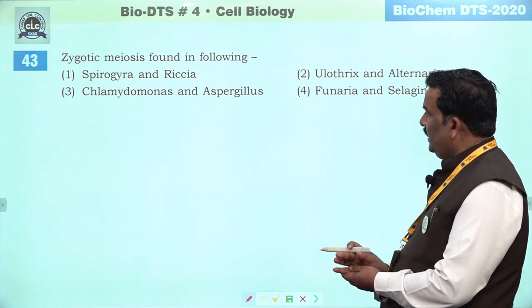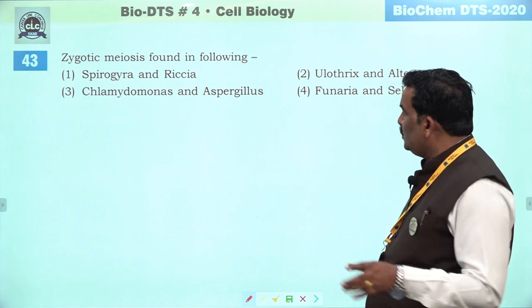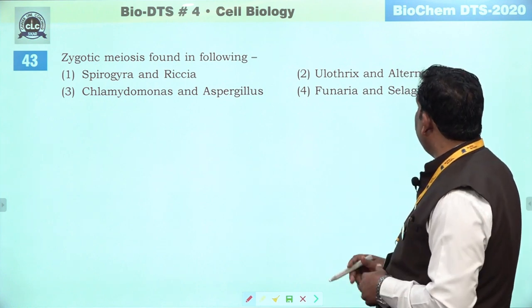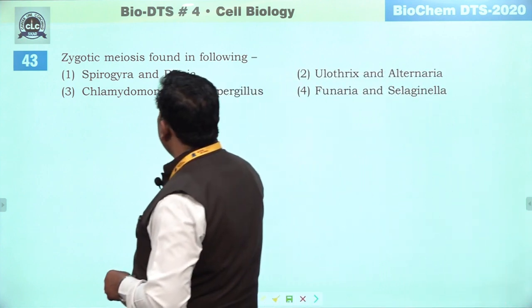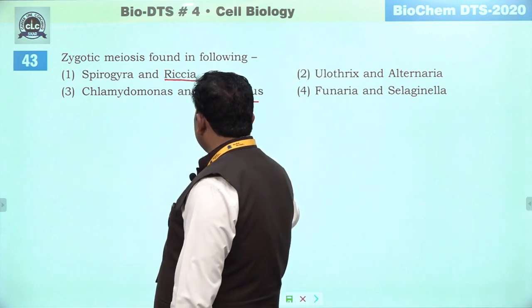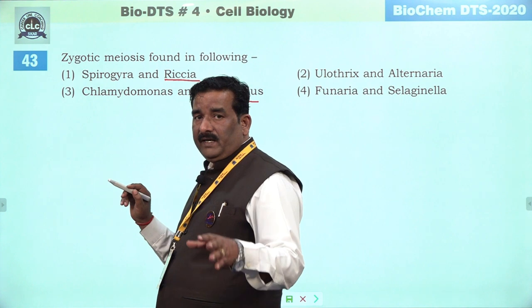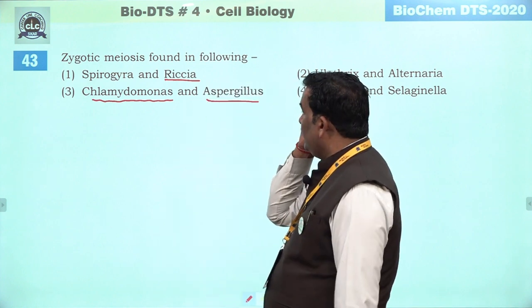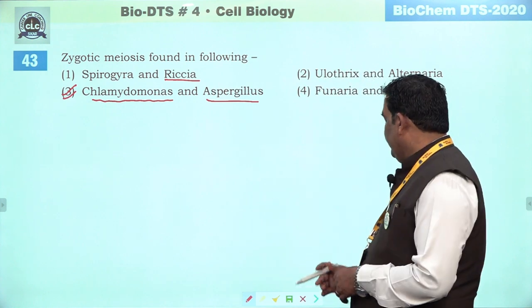Next question: zygotic meiosis found in following. Zygotic meiosis NCRT-based study hai — thallophyta ka unique character hai. Alternate area mein sexual reproduction nahi hota — second option nahi ban sakta. Riccia ek bryophyte ka member hai — yeh option nahi ban sakta. Aspergillus ek fungus hai, jismein sexual reproduction bhi hota hai, zygotic meiosis bhi, fruiting body yaani ascocarp mein hota hai. Chlamydomonas mein bhi hume zygotic meiosis milti hai. Third humare liye ek behtar option hai — third is the right answer.